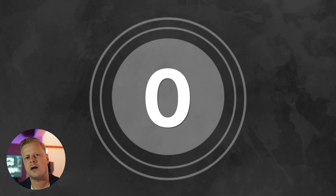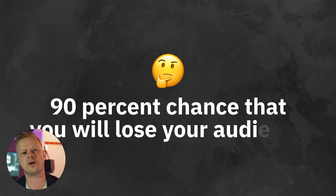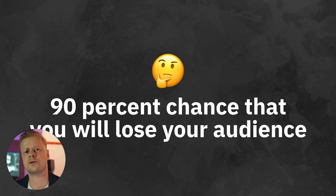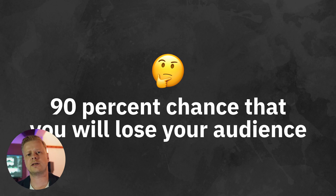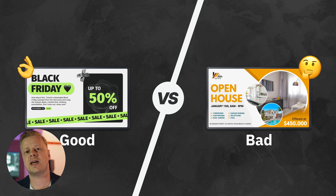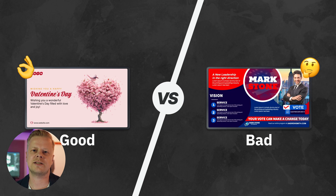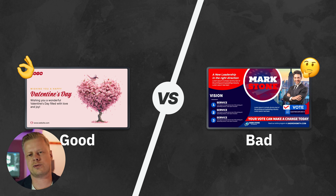You have about three seconds to convey the main idea to the viewer. If you fail to engage your audience during this short time frame, there is a 90% chance that you will lose them. That's why colors should be contrasting, and the headline should be readable, short and clear.